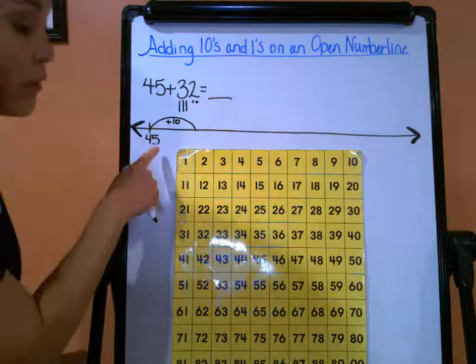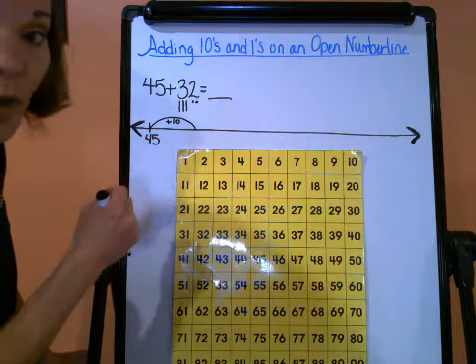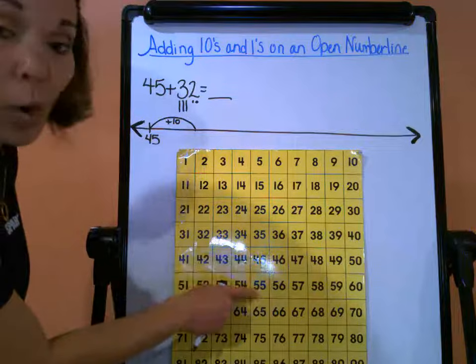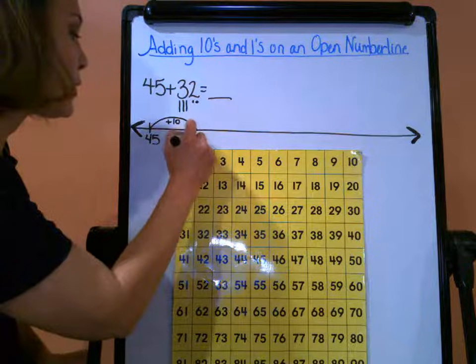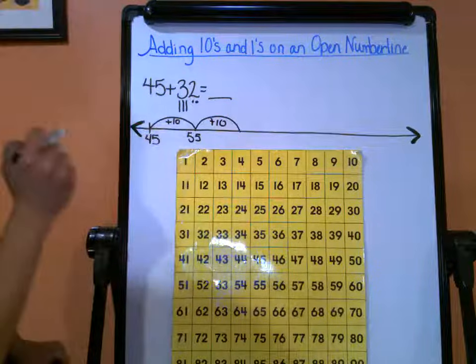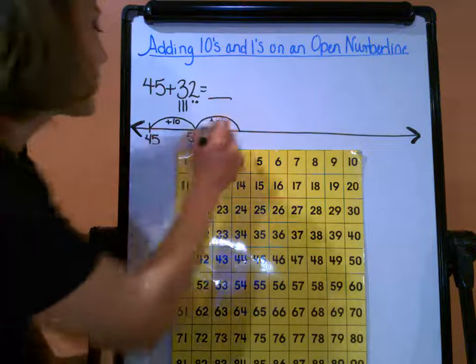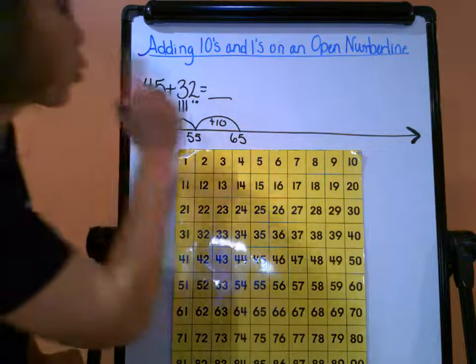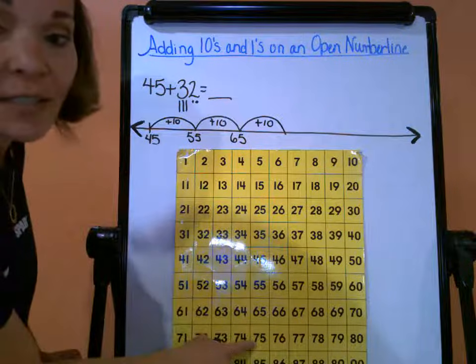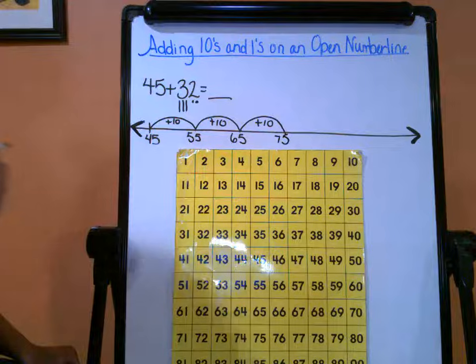45, and don't forget we also have our hundreds chart here to help us. Remember, the direction that we're going, which is down, because of course we are adding, so we're doing in increments of ten, so we're staying in that column. 45, ten more, it's going to be 55. All right, that's my first ten. Second ten, my second big hop: 55, ten more is 65. Then I'm going to do one more hop because I have one more ten. That's my last big hop. So 65, and then ten more, it's going to be 75.